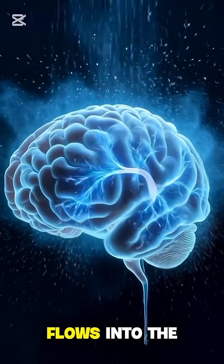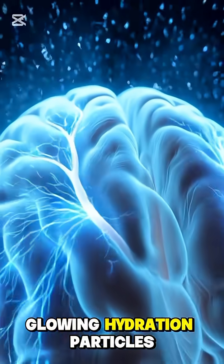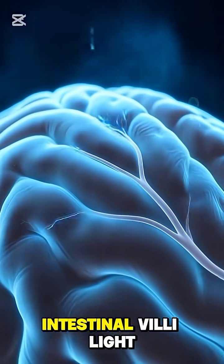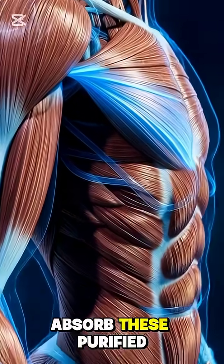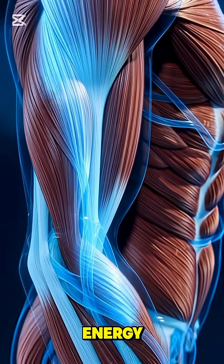The water then flows into the small intestine, where every drop transforms into bright glowing hydration particles. Intestinal villi light up as they absorb these purified molecules, sending hydration into the bloodstream and filling the body with renewed energy.